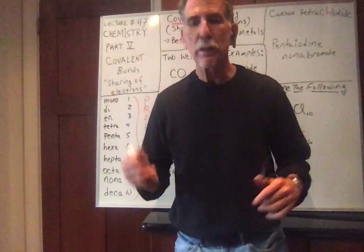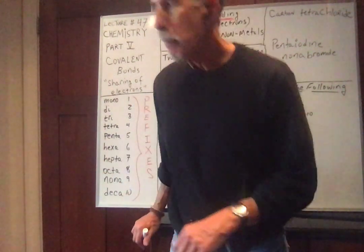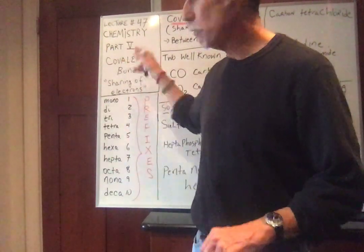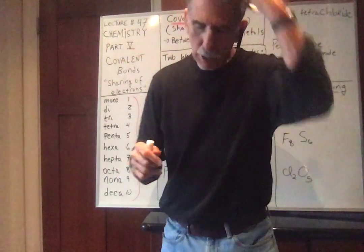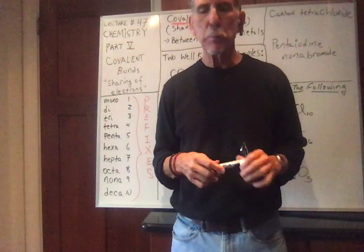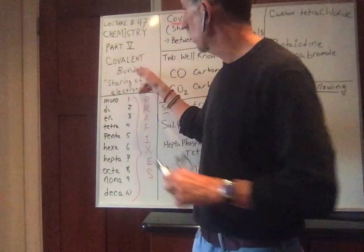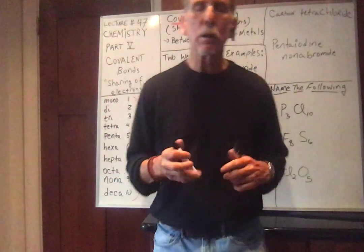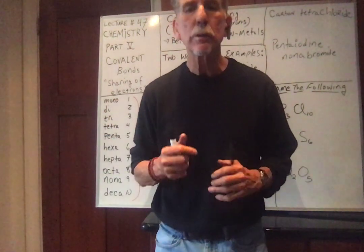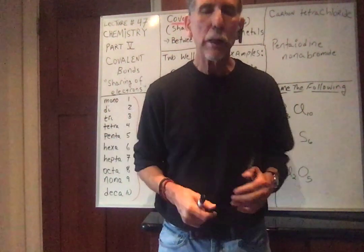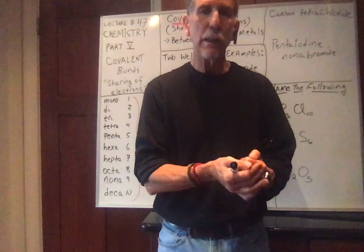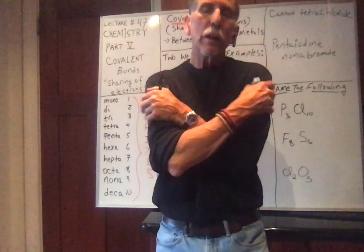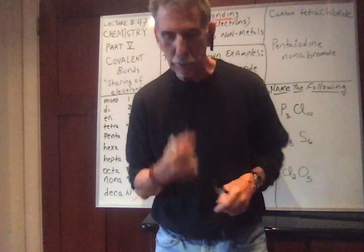Hey everybody, welcome back. Lecture number 47, we continue our discussion of chemistry, part 5, and we're going to finish up our discussion of bonding. Today we're going to talk about covalent bonds, or the sharing of electrons. If you remember, ionic bonds, whether monatomic or polyatomic, is giving and taking. Here, we're going to share electrons, so there's going to be no ions.